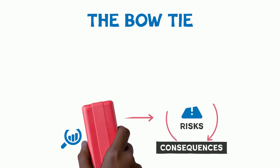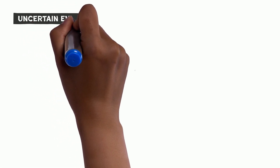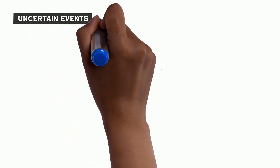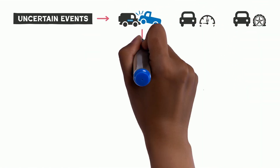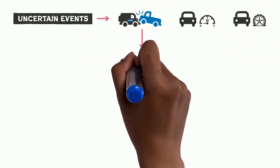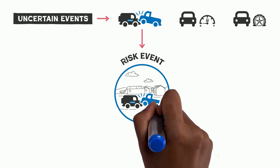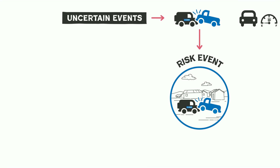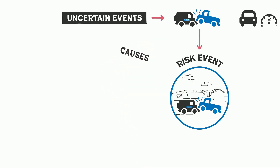So how do you use the bowtie tool? Start by asking what uncertain events may happen in the future that could impact your work. For example, what could happen during a field mission? Once you have identified the risk events, place one of them in the center of the diagram.